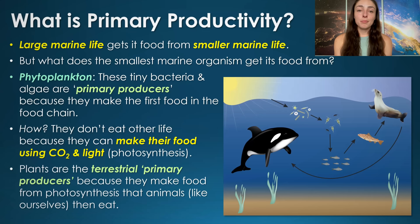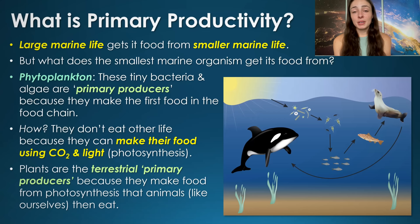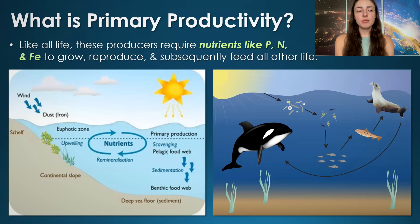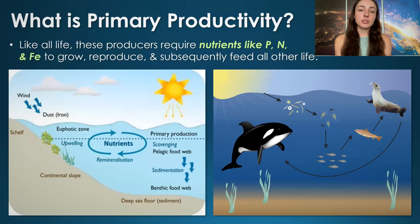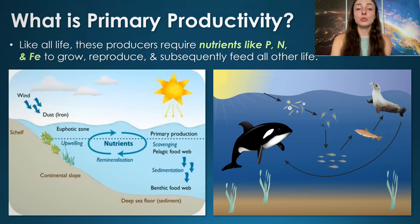These autotrophs are primary producers because they're the first line in the production of food that goes up the food chain. Plants are an example of terrestrial primary producers — they photosynthesize and get their carbon from inorganic sources. But like all life, these primary producers — phytoplankton, bacteria, algae at the ocean surface — need more than just light and carbon dioxide. They need other nutrients like nitrogen, phosphorus, and iron.